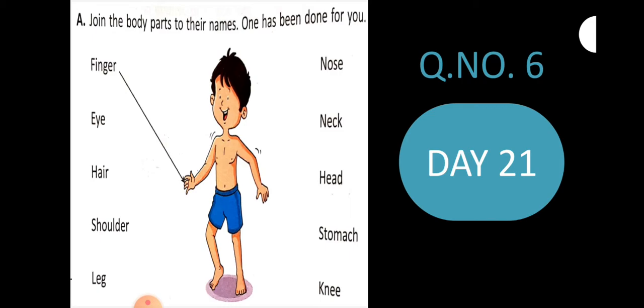Next we join eye, hair, shoulder, leg, nose, neck, head, stomach, knee. We have joined all the body parts with their names.